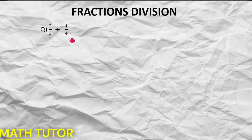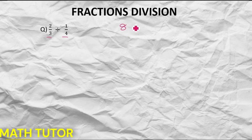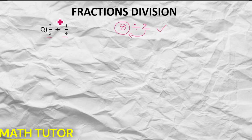Let us take a question here for fractions: 2 by 3 divided by 1 by 4. To understand what this means, consider 8 divided by 2 — that means how many 2s are there in 8. Same way here: how many quarters (1 by 4s) are there in 2 by 3? That's what it means.